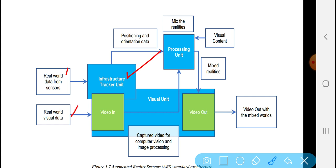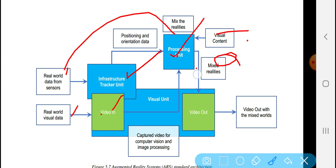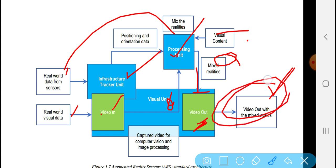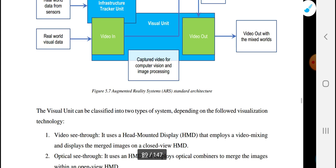The video data is sent in the video form to the processing unit. The processing unit handles the visual content and merges virtual content with real content. The video out module on the visual unit then displays the result through the chosen display.